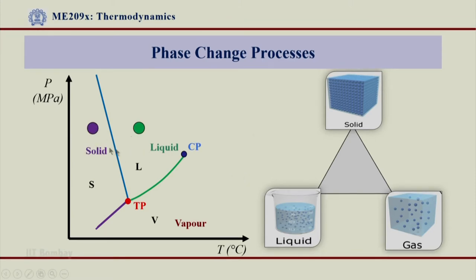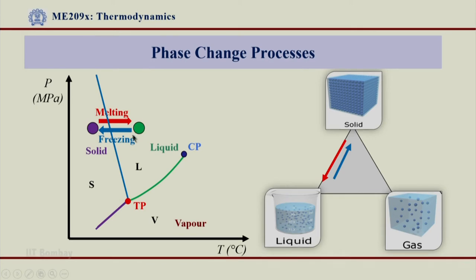Let us now see the solid to liquid phase change process. I have one point in the solid region and a second point in the liquid region. This phase transition will happen if I increase the temperature from the solid to liquid region — this process is called melting. When the temperature increases, the solid gets converted to liquid form, and this process happens across the SL saturation line, during which latent heat also comes into existence. Conversely, if I reduce the temperature of the liquid, it will get solidified — the reverse of melting — and that is what we call freezing. Melting and freezing are two opposite processes, shown in this triangle as well.